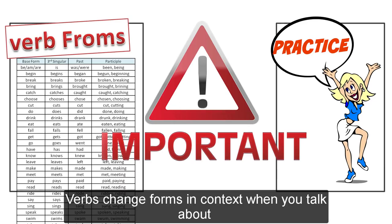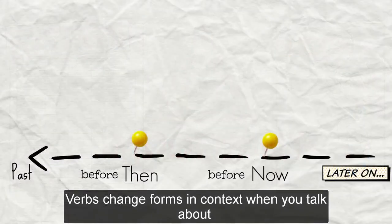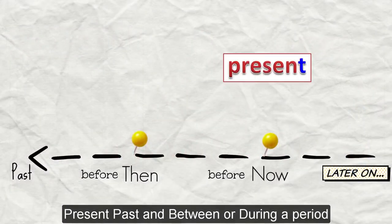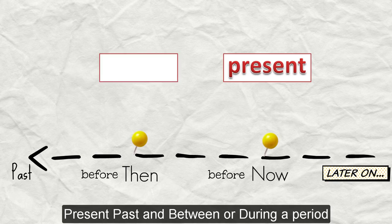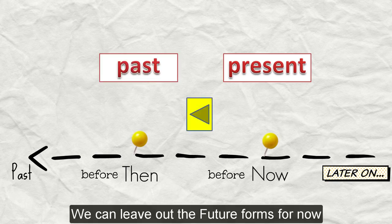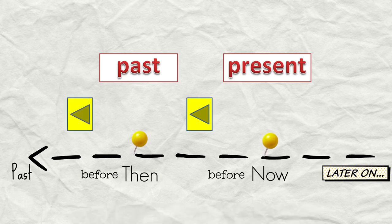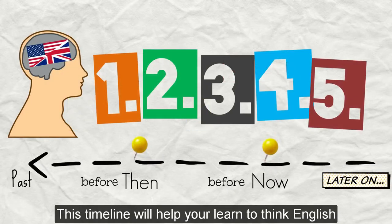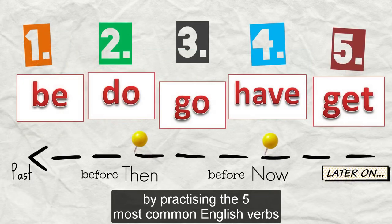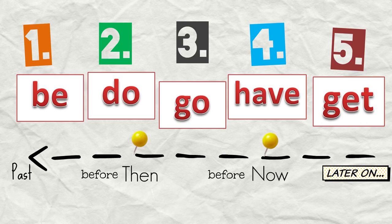Verbs change forms in context. When you talk about present, past, and between or during a period of time, we can leave out the future forms for now. This timeline will help you learn to think English by practicing the five most common English verbs: be, do, go, have, get.